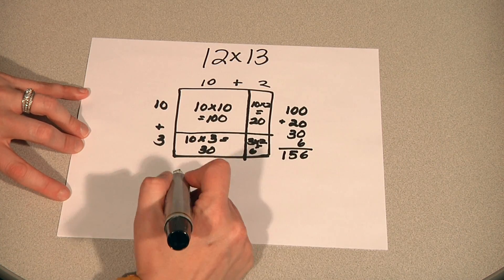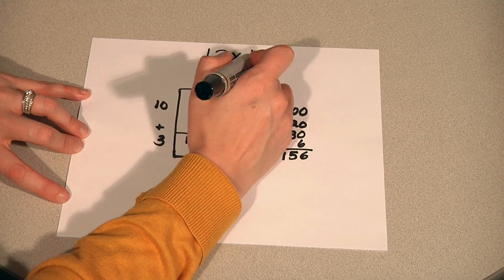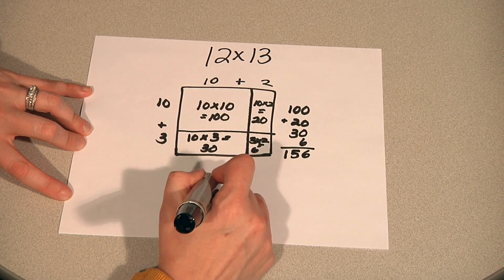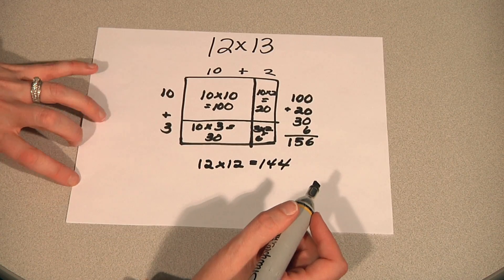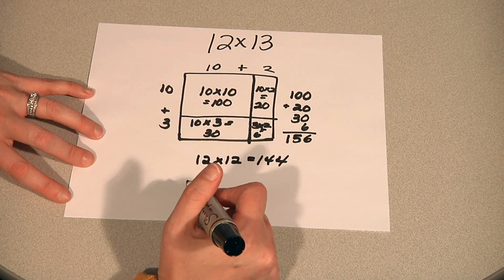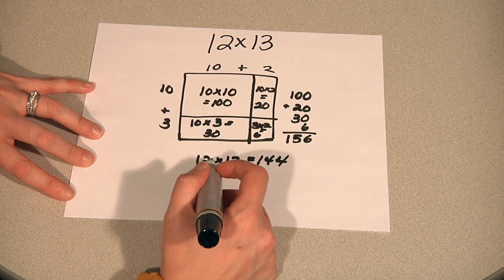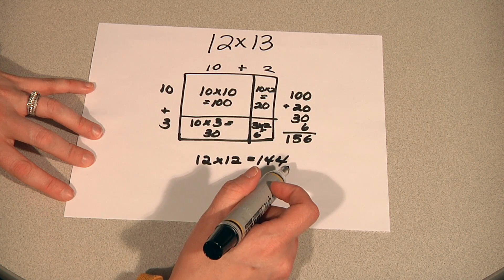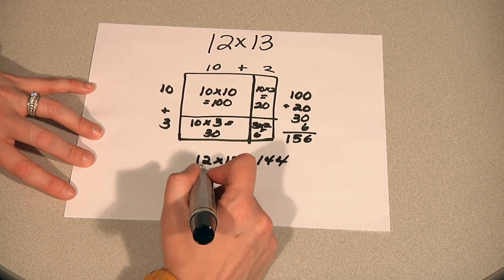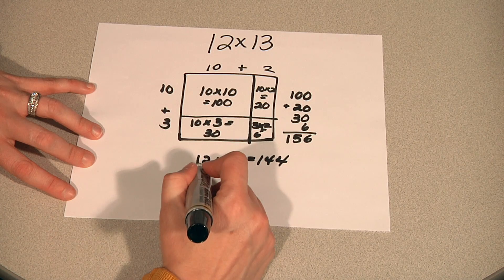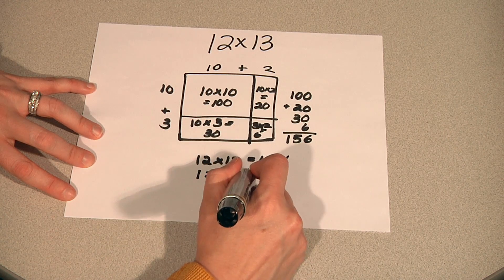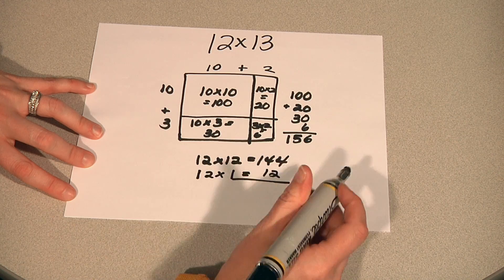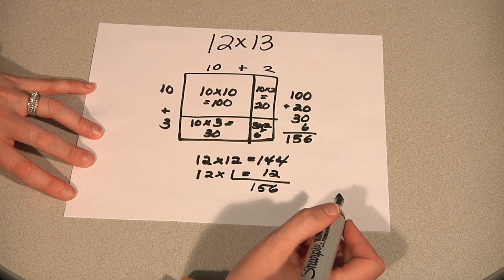Students may also come to know, when they see a problem like twelve by thirteen, that twelve times twelve equals one hundred forty-four. In their fluency work, this becomes a little more automatic. Once they understand that twelve times thirteen is equal to twelve times twelve plus twelve times one, which is twelve, they can find the total of one hundred fifty-six quickly.